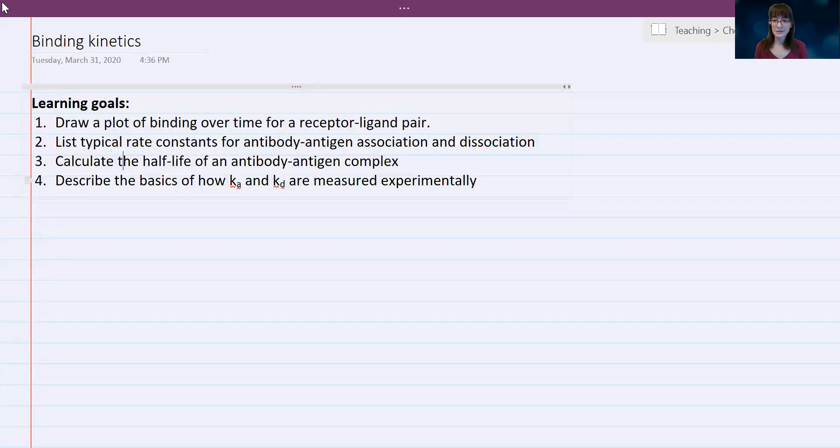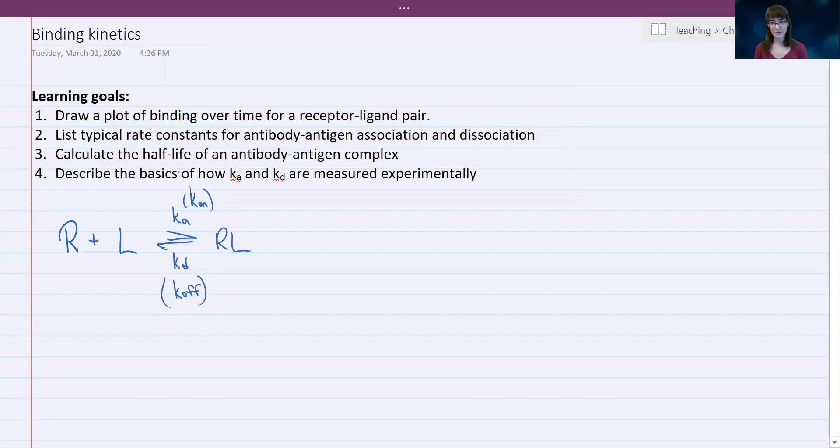All right, so even though in the last lesson we talked extensively about polyvalency and all kinds of fancy aggregates, here we're just going to go back to our very simple case where a monovalent receptor binds a monovalent ligand and it forms this one-to-one complex. So we're just thinking about that and we're going to have the rate constants K association and K dissociation. Sometimes you might also see these written as K on and K off as an alternative way to distinguish them from the big capital letter KA and KD.